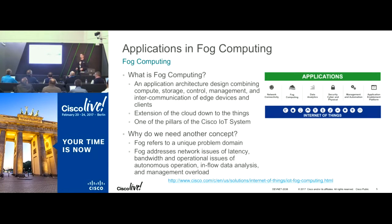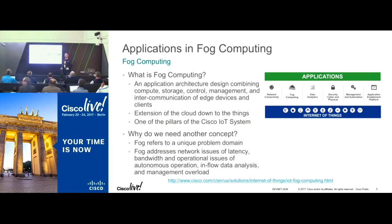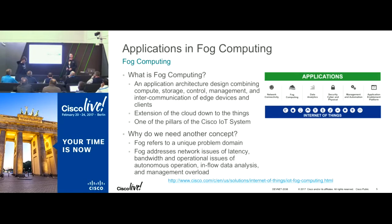So what is fog computing? Fog computing is the aggregation of all the equipment, sensors, compute, data storage, and data analytics — everything that is combined to bring in all the data that you have in the field. What that allows us to do is process all the data we're collecting from all these different areas.